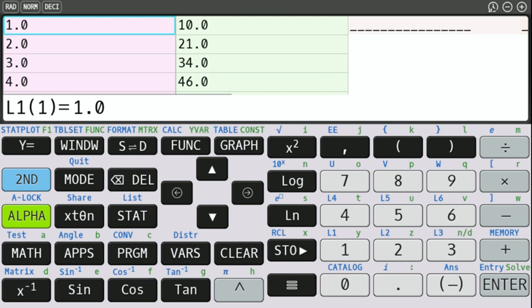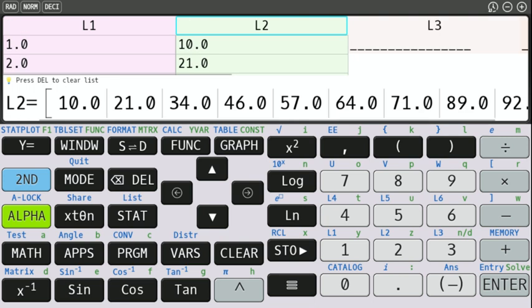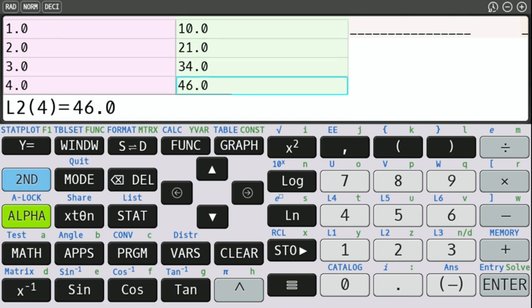In L1, I just have all of the integers from 1 through 9: 1, 2, 3, 4, 5, 6, 7, 8, 9. In L2, and it is important that you put these in the same order. In L2, in the first cell, I have 10, and then 21, 34, 46, 57, 64, 71, 89, and 92.